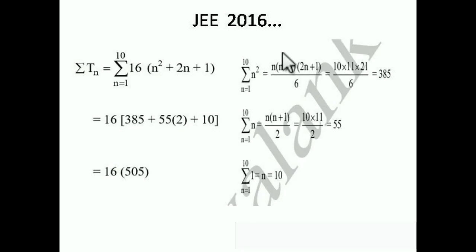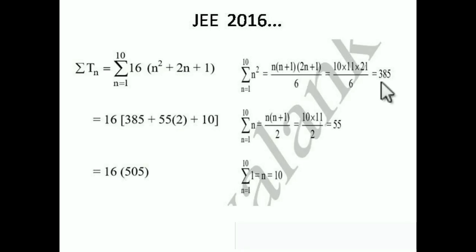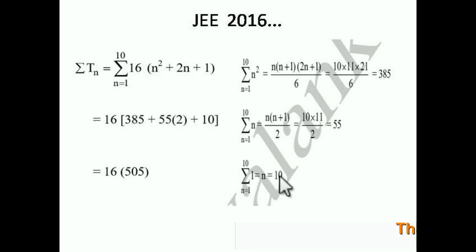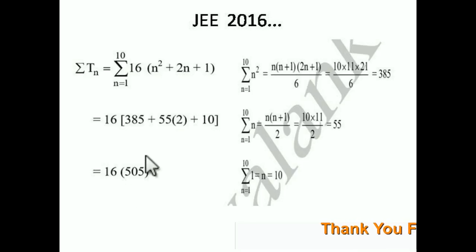Students who don't know these formulas should refer to the topic lectures. The formula for Σn² = n(n+1)(2n+1)/6, for Σn = n(n+1)/2, and Σ1 = n. Putting n = 10: Σn² = 10·11·21/6 = 385, Σn = 10·11/2 = 55, and Σ1 = 10. So the summation of the series is 16 × (385 + 2×55 + 10) = 16 × 505.